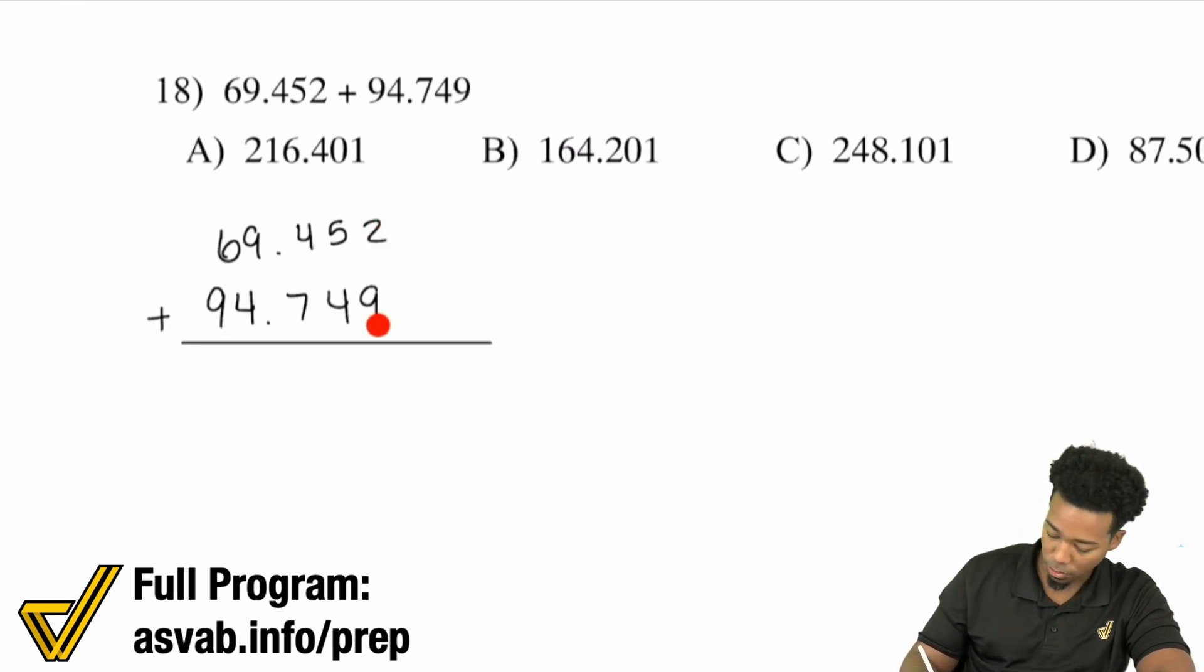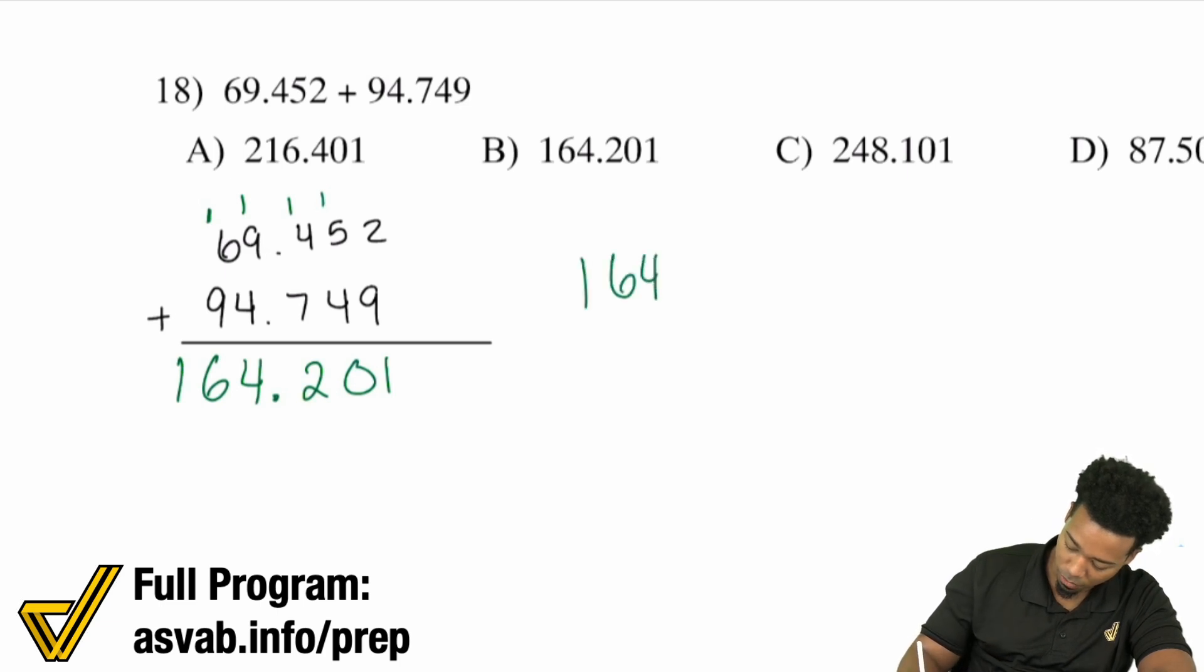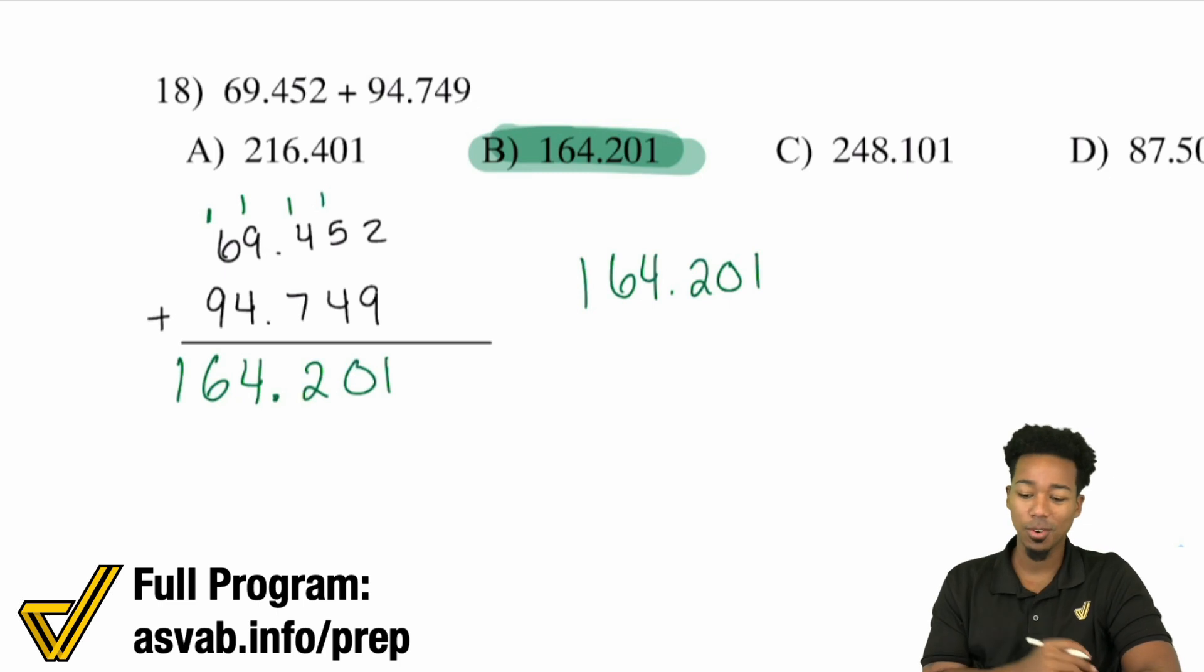So over here, what we've got going on is 2 plus 9. And that's going to go ahead and be 11. Carry the 1. 1 plus 5 is 6. 6 plus 4 is 10. Carry the 1. 1 plus 4 is 5. 5 plus 7 is 12. Carry the 1. 1 plus 9 is 10. 10 plus 4 is 14. Carry the 1. 1 plus 6 is 7. 7 plus 9 is 16. And so we have 164.201. And our answer is B. So notice even something that looked as complicated as five decimals or five digits. Doesn't matter. Doesn't matter. We can still get this done the right way and still have a great time doing it.